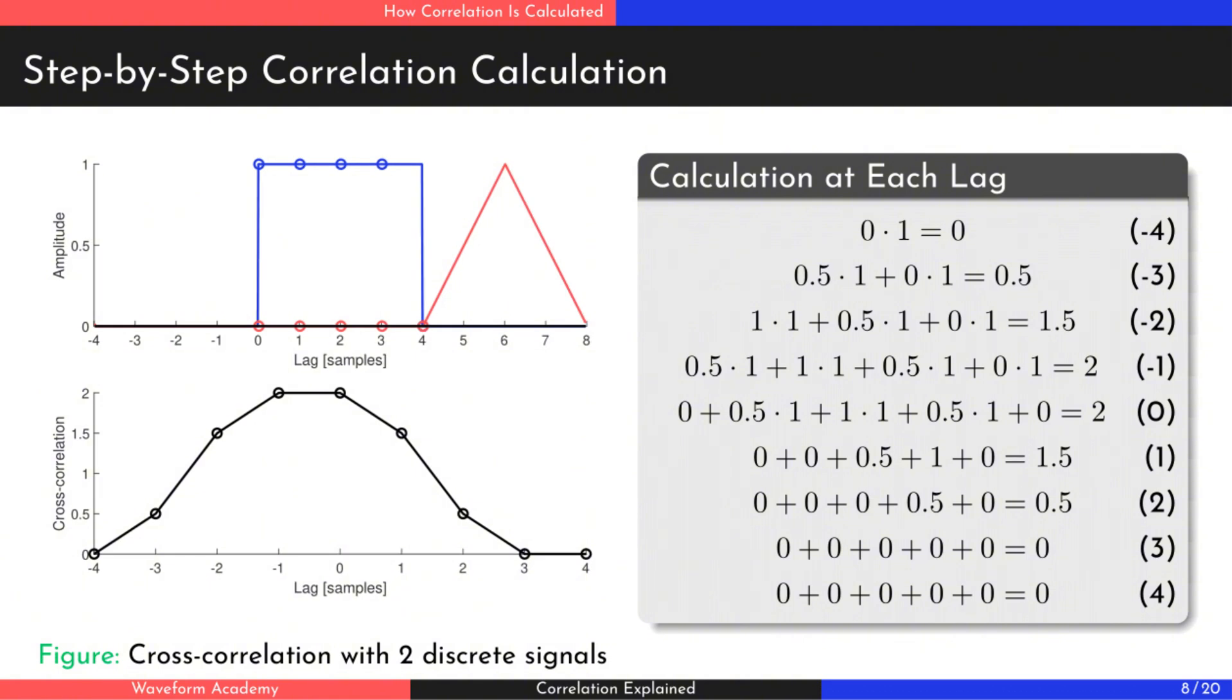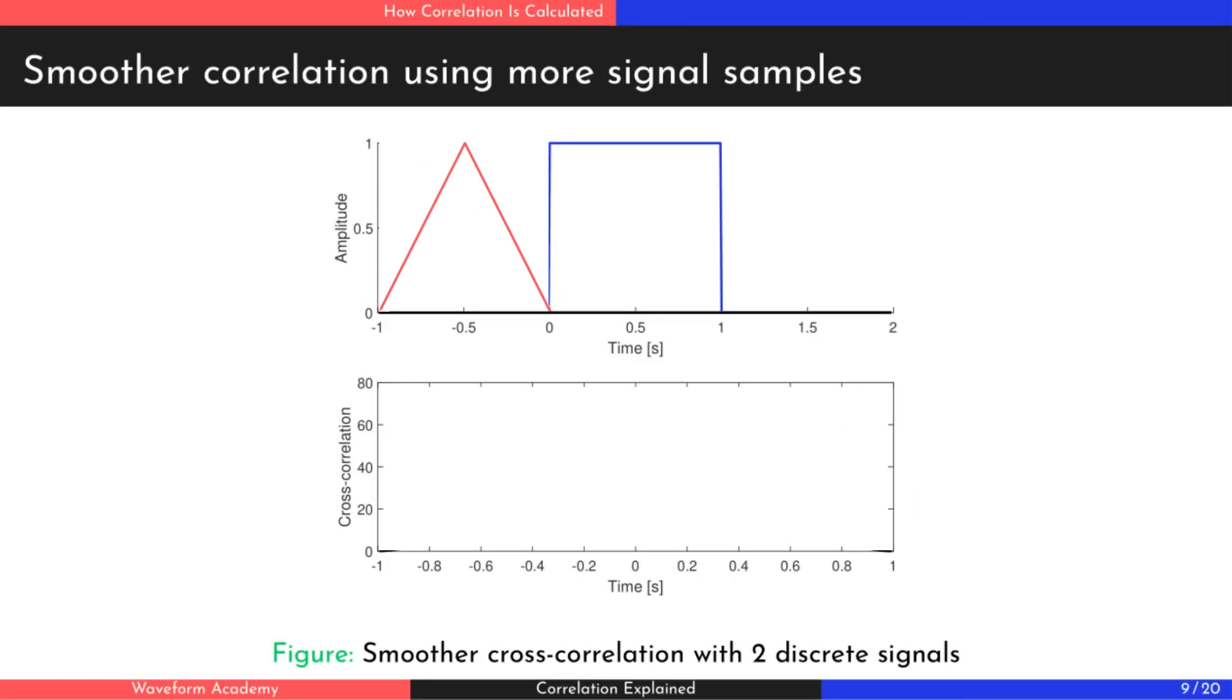As you can see, the signals are most similar when they align perfectly. For a smoother correlation function, we can use more samples in the calculation. Let's take a look at the result.